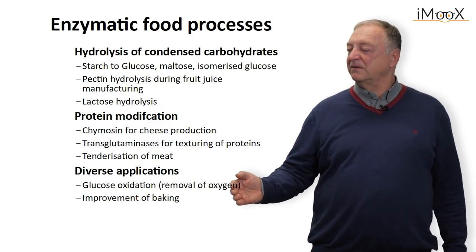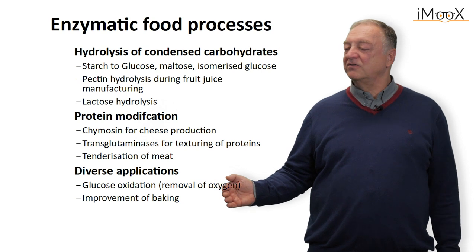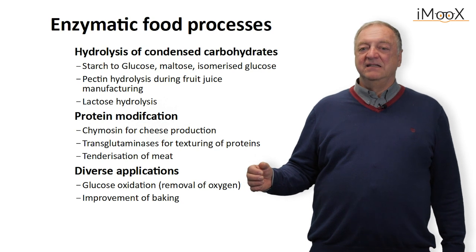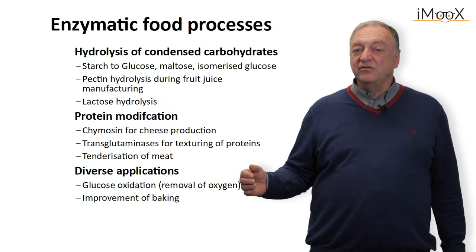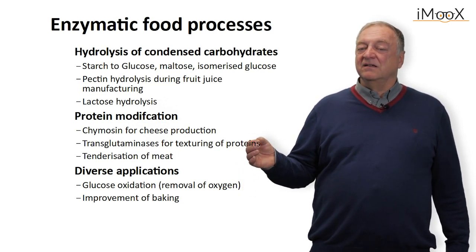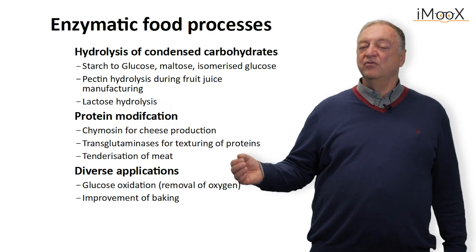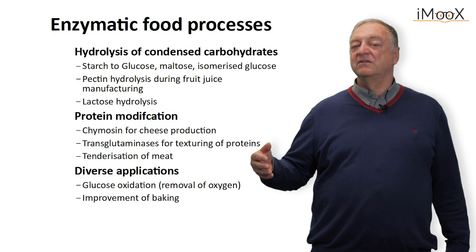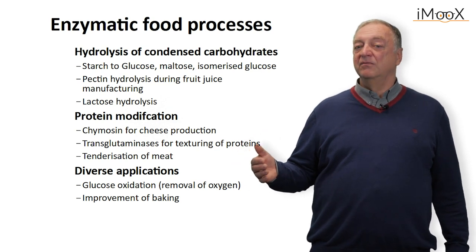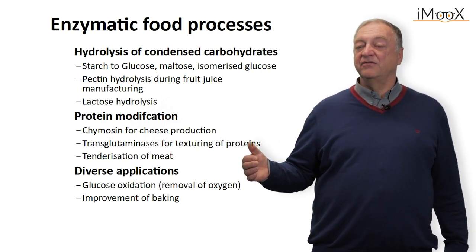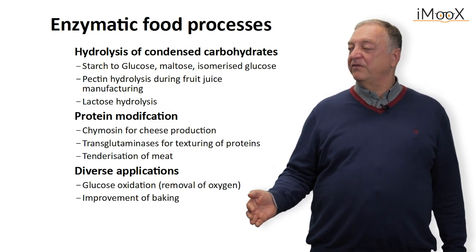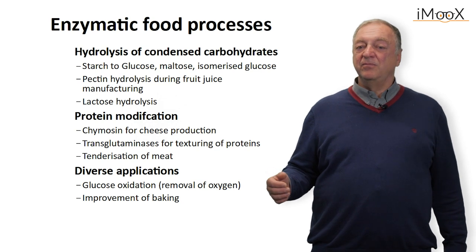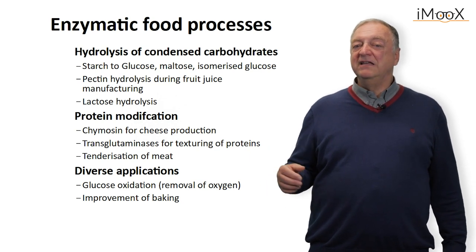One example to mention is glucose oxidase, which is used in hermetically sealed foods such as fruit juices, where oxygen is removed by the oxidation of glucose. This gives a stable product that cannot be oxidized after packaging. We can also improve the baking process by liberating fermentable carbohydrates during kneading of the dough.